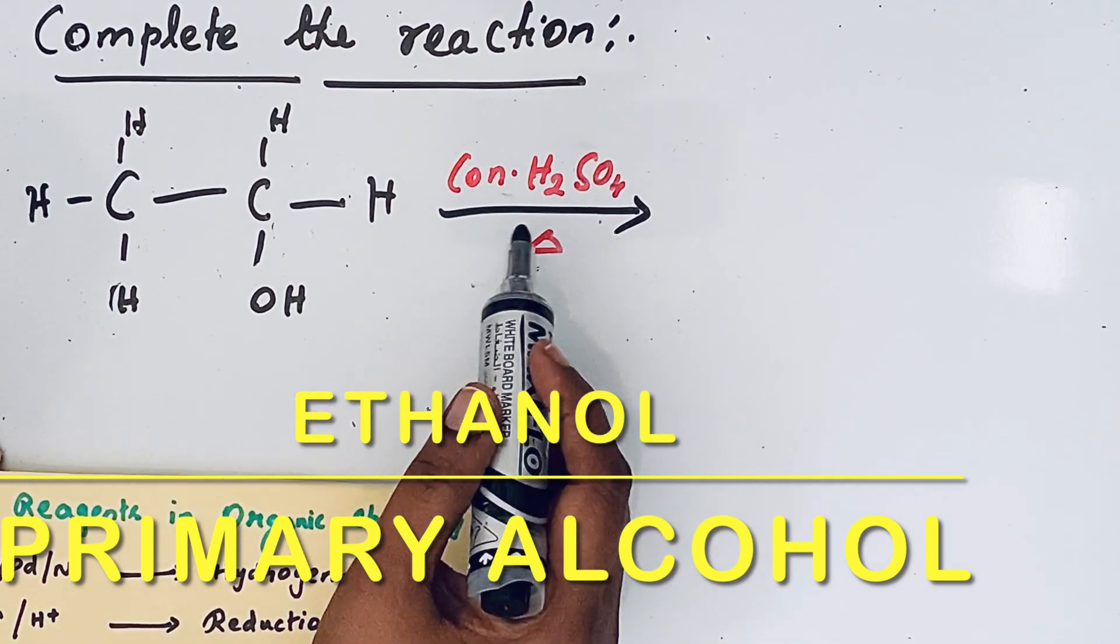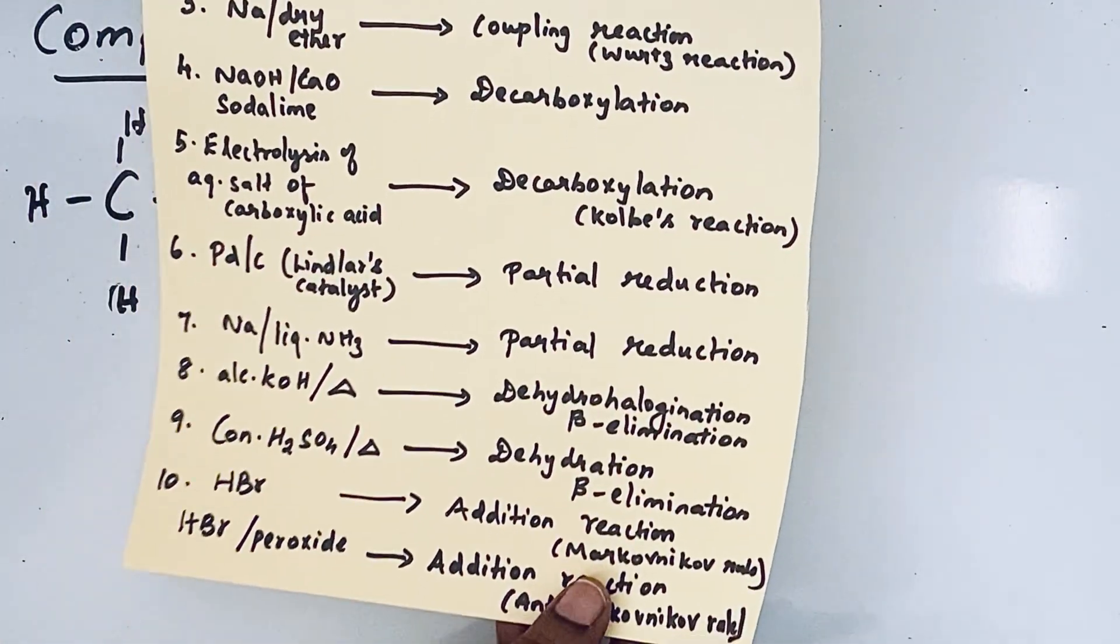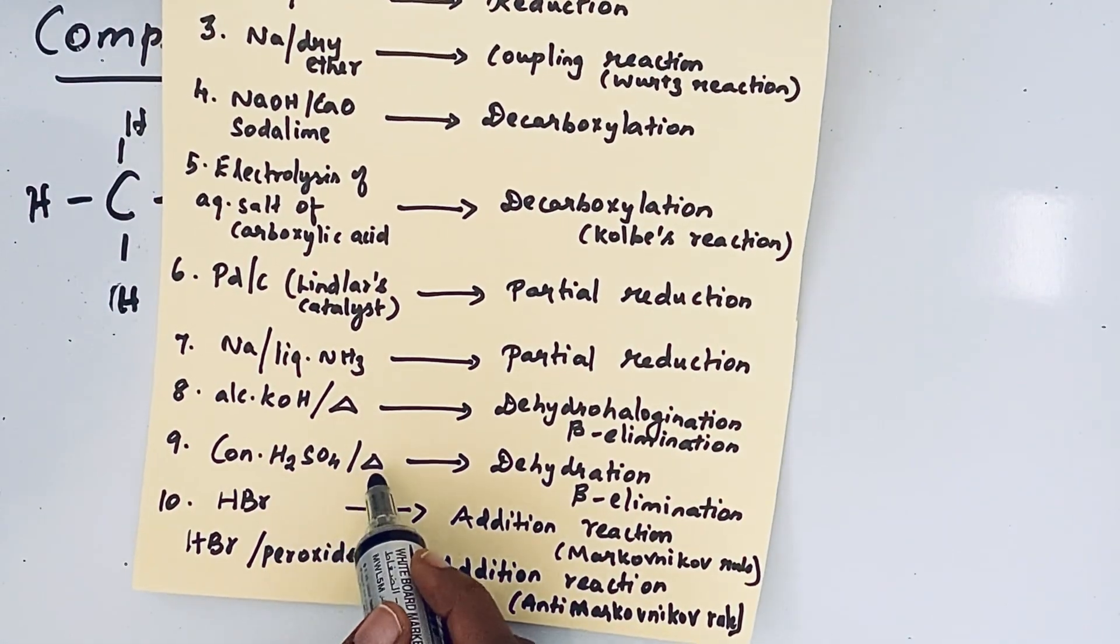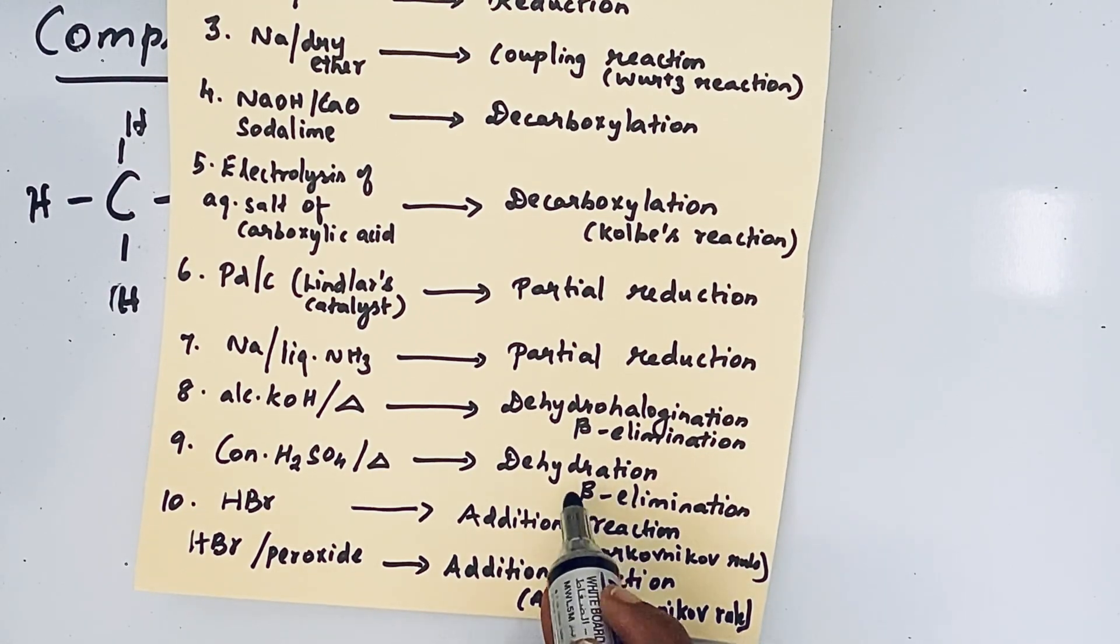CH3CH2OH with concentrated H2SO4 on heating. So let us search for that reagent, concentrated H2SO4 on heating. Yeah, we can find it here. So dehydration, beta elimination.